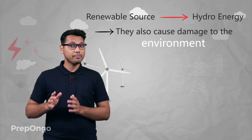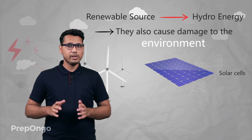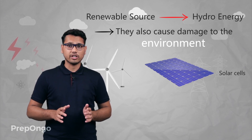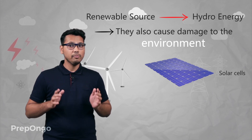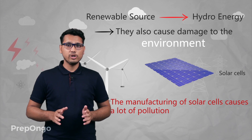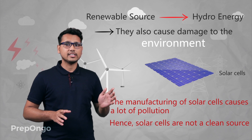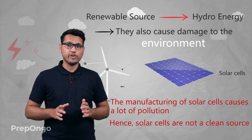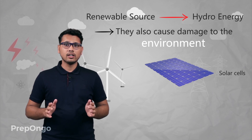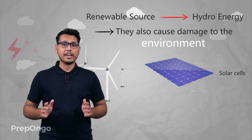Even if we take the example of solar cells, they seem to be pretty much clean as they produce no pollution while working. But during the manufacturing of solar cells a lot of pollution had already been caused. So we can't say that solar cells are a cleaner source of energy, as they are causing damage to the environment during manufacturing.